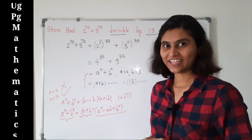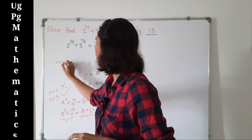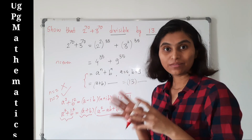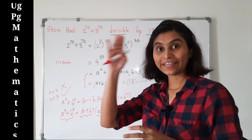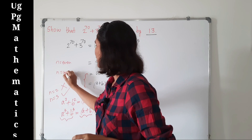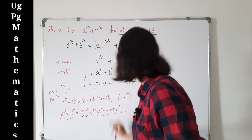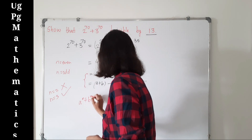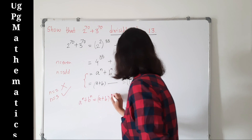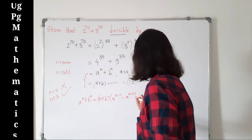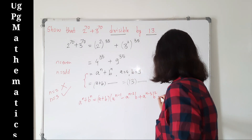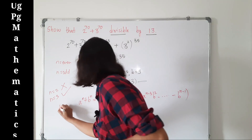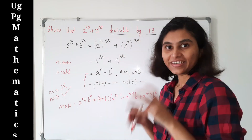In fact there is a generalization: if n is even, then (a plus b) is not a factor of a raised to n plus b raised to n, so it is not divisible by (a plus b). But if n is odd, there is a general formula: a raised to n plus b raised to n equals (a plus b) times (a raised to n minus 1 minus a raised to n minus 2 times b plus a raised to n minus 3 times b squared and so on, minus b raised to n minus 1).